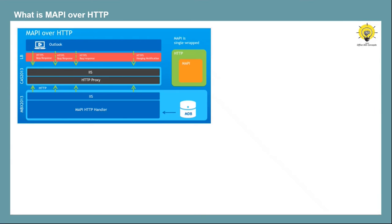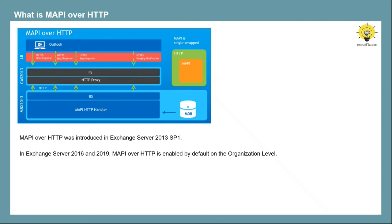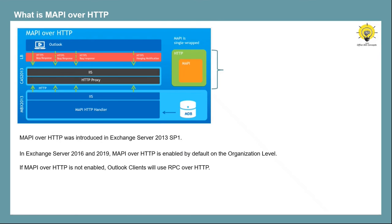MAPI over HTTP is a transport protocol that replaces Outlook Anywhere. It was introduced in Exchange Server 2013 SP1. In Exchange Server 2016 and 2019, MAPI over HTTP is enabled by default at the organization level. In MAPI over HTTP, MAPI is wrapped with only HTTP protocol, and instead of two long-term connections, it uses one long-term connection and one short-term connection, which results in faster communication. By default, Outlook 2016, 2019, or Outlook 365 uses MAPI over HTTP. But if MAPI over HTTP is not enabled, Outlook clients can still use RPC over HTTP to connect.